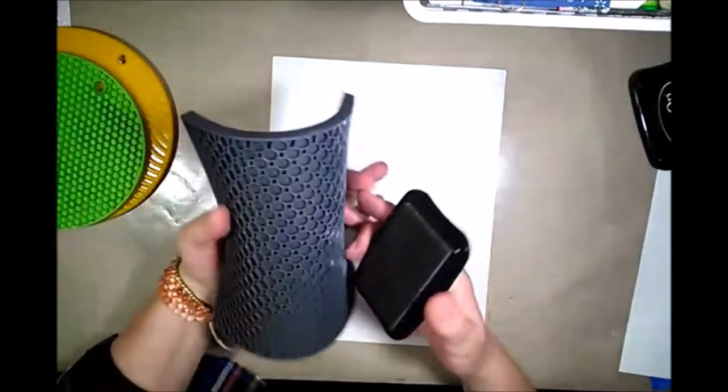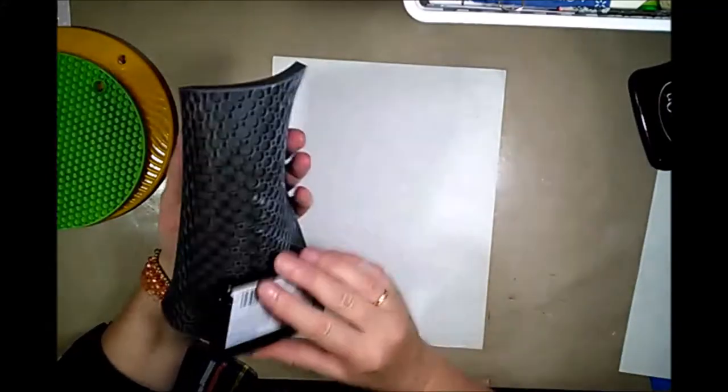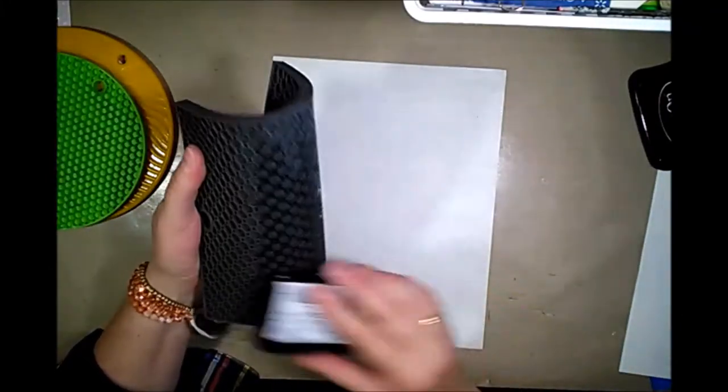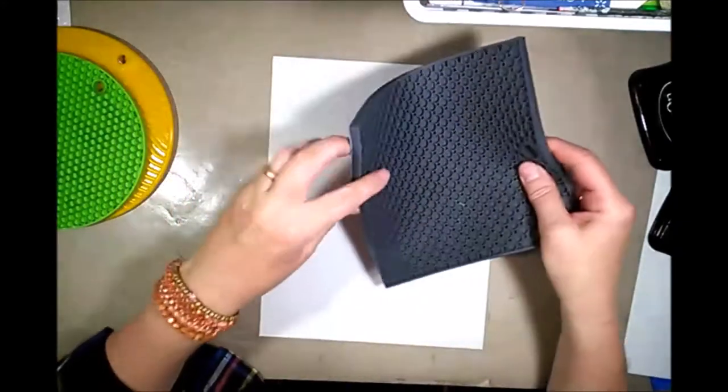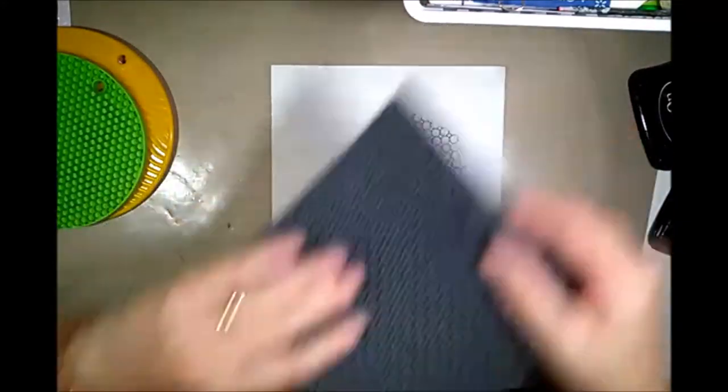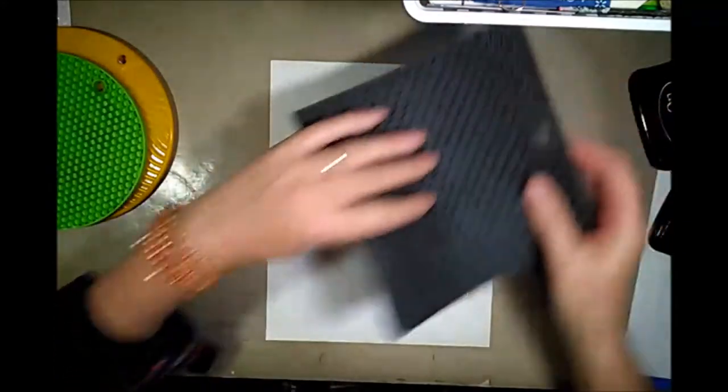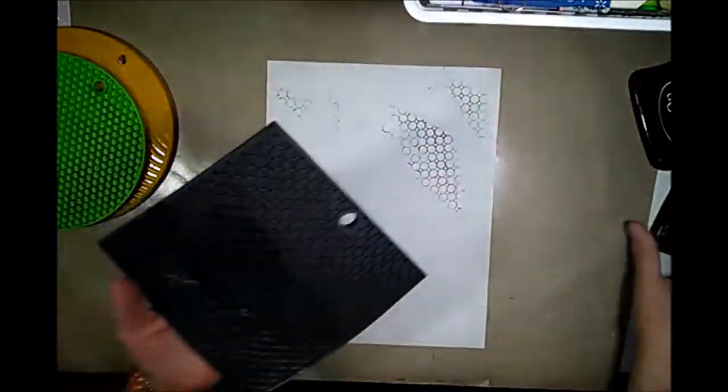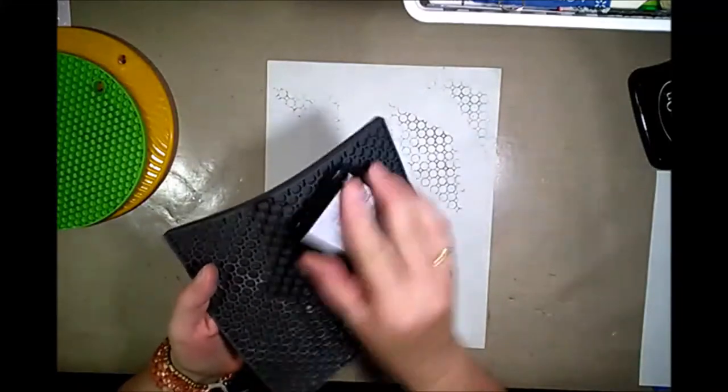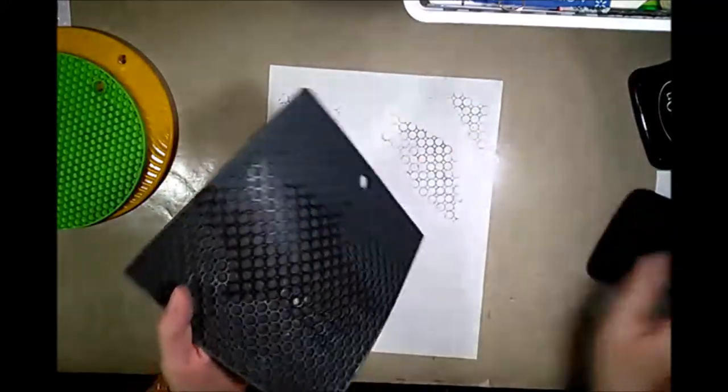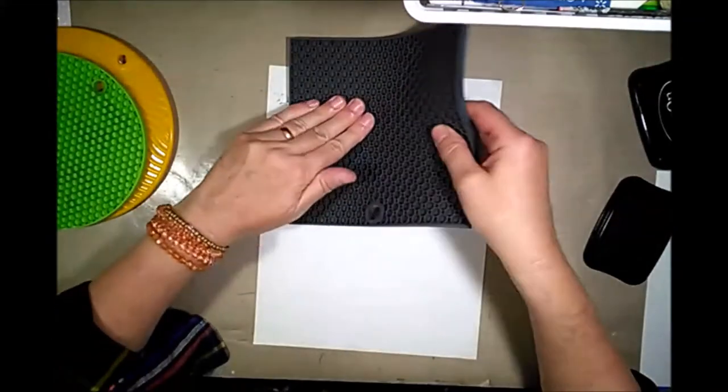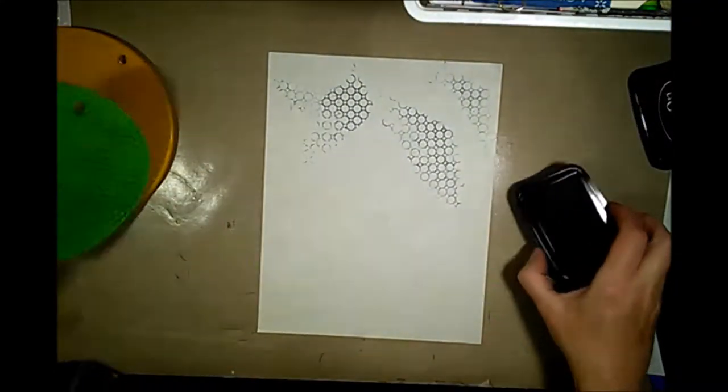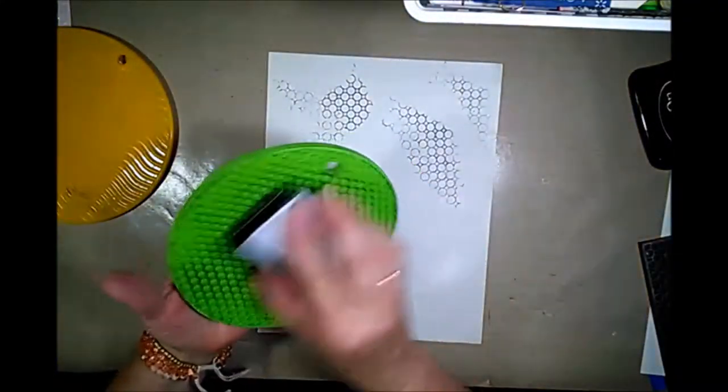The nice thing is that they are moldable and bent, so if you want just a little background stamping, you can avoid the edges and look what a nice crisp image they make. Of course, you need to ink it up again. There we go, pretty cool. And let's do this one. I think they work really well.